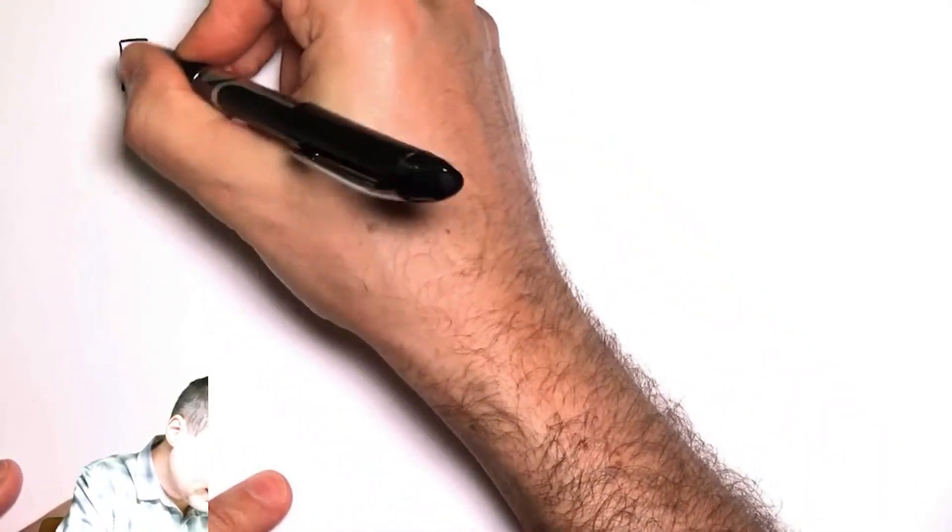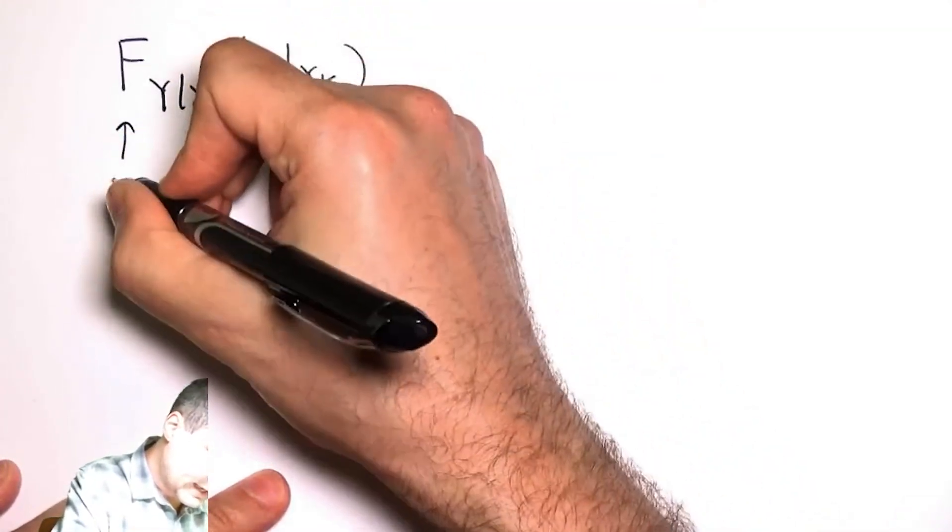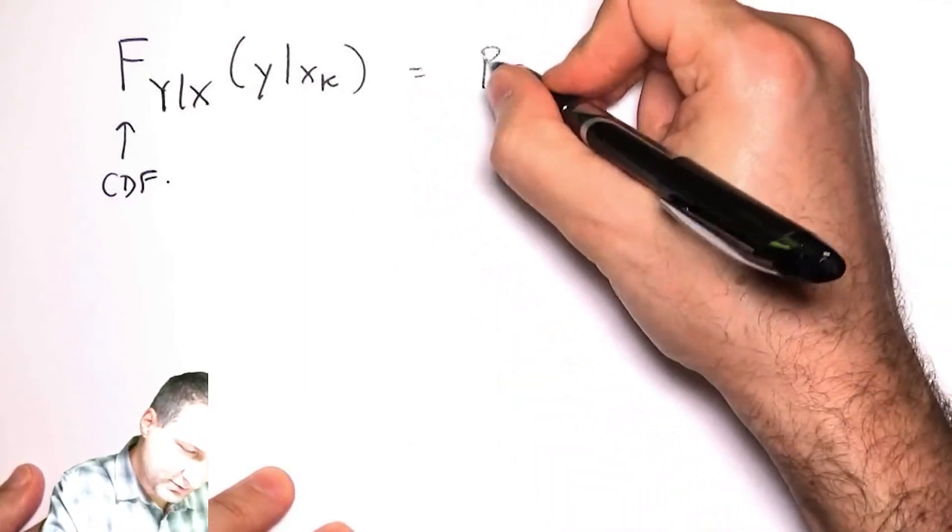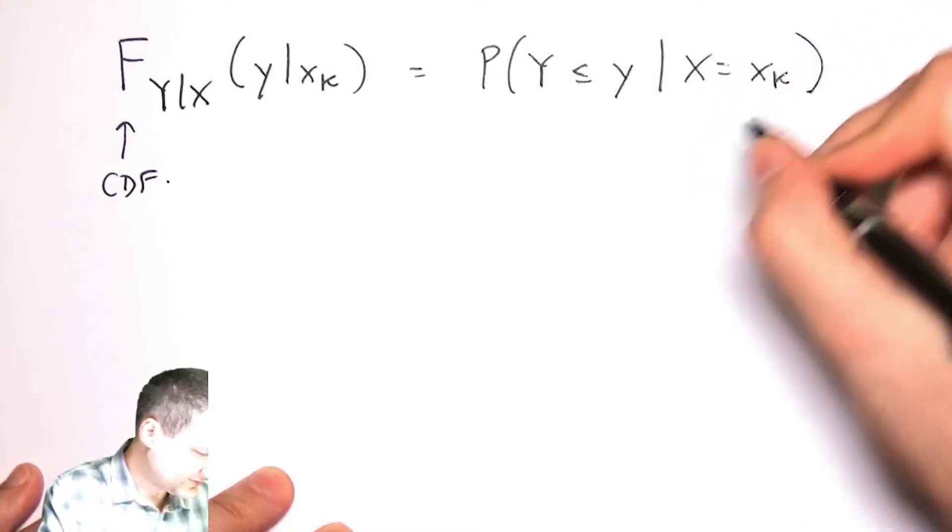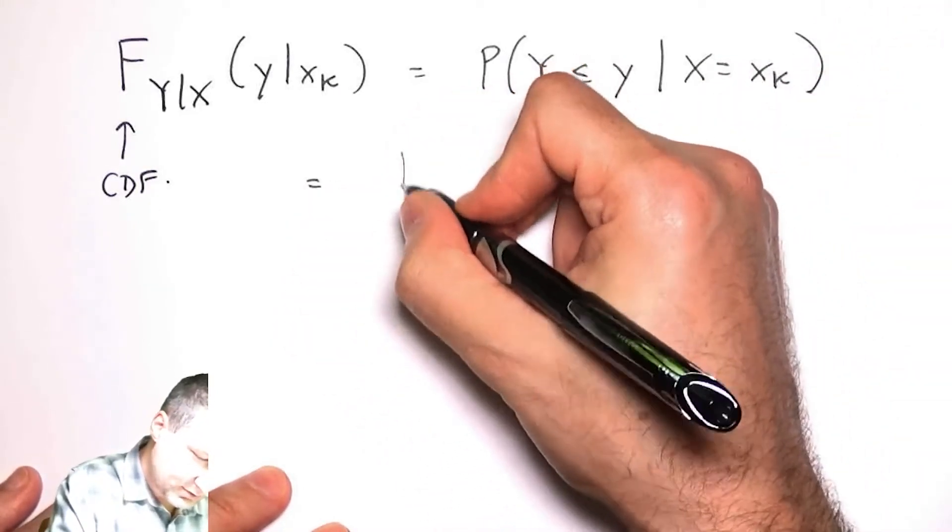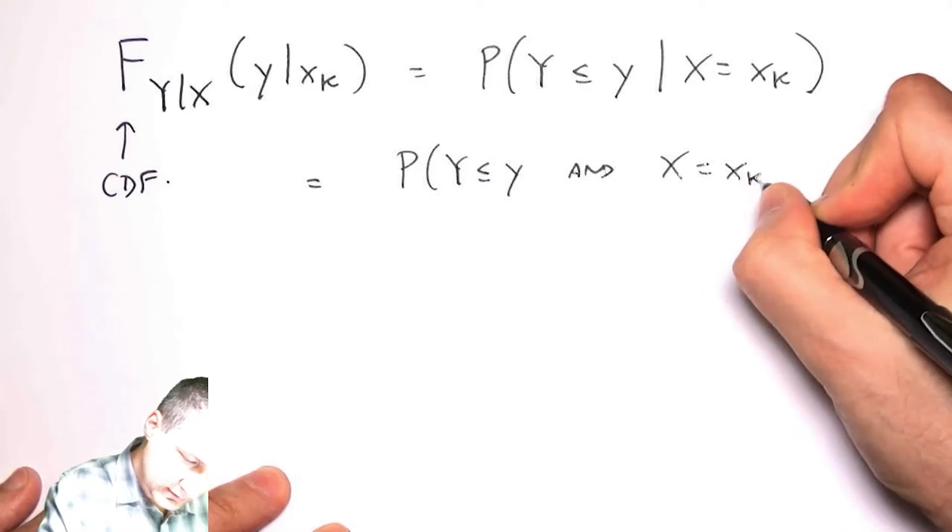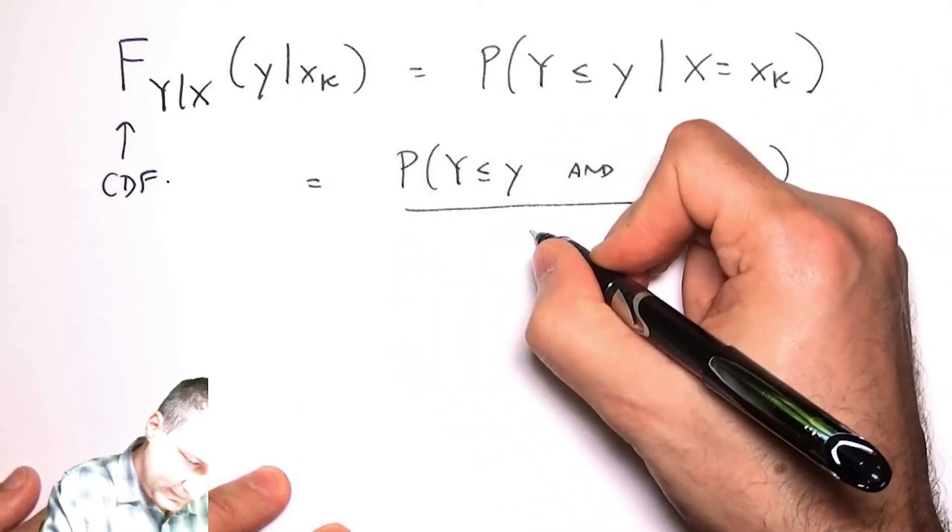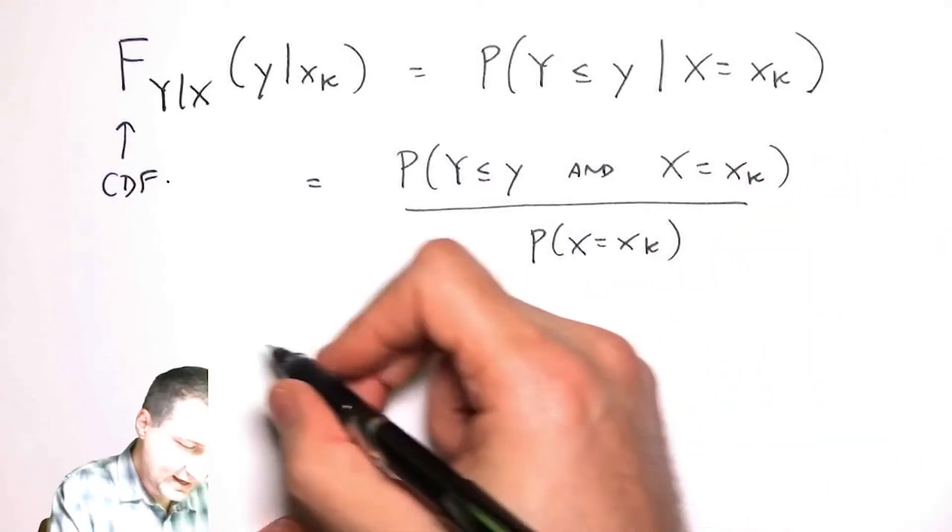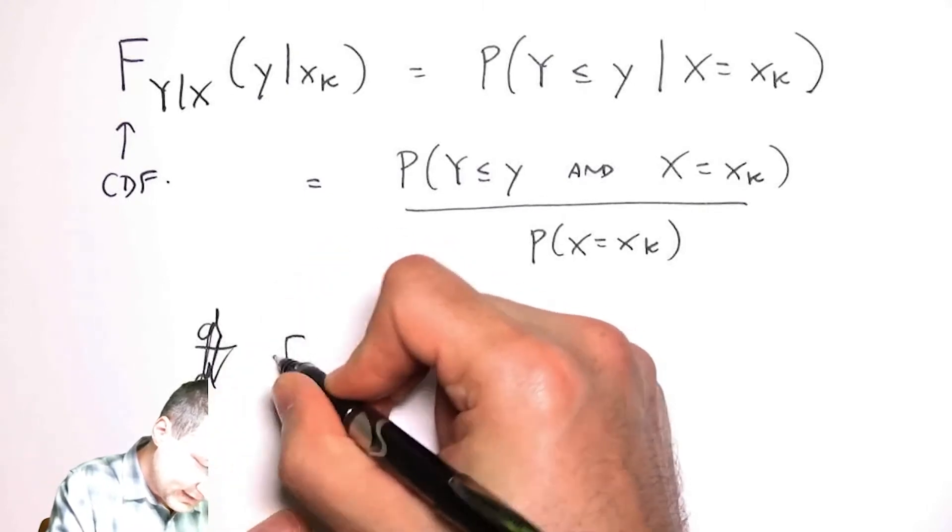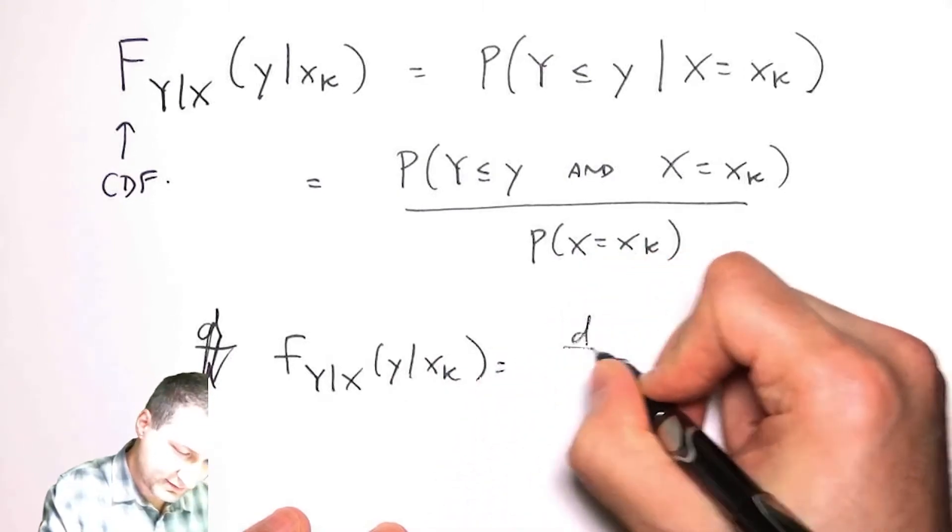To really define it, we have to go through the CDF. Capital F means CDF. This is the probability that y is less than some value given that x equals xk, which is basically the probability that both of these things are true over this probability, assuming that this value exists. Then the PDF that I'm looking for is just the derivative of the CDF.